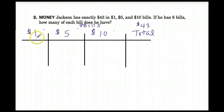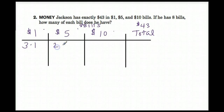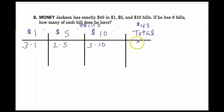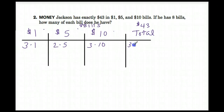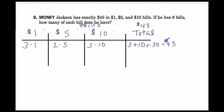Let's try maybe three $1 bills. We're going to say 3 times 1. Then maybe two $5 bills. How many bills do we have left? That would mean there are three $10 bills. Does that equal $43? 3 times 1 is 3, plus 2 times 5 is 10, plus 3 times 10 is 30 — right off the bat, we have $43. We know that is our right amount.